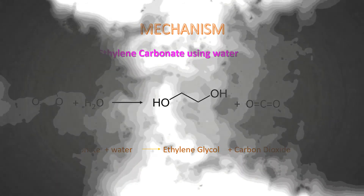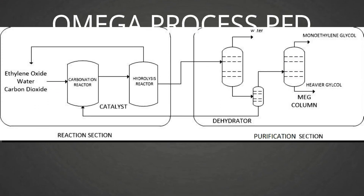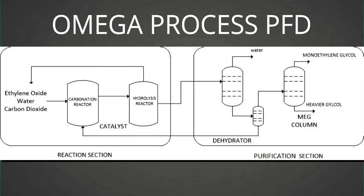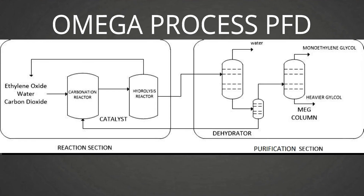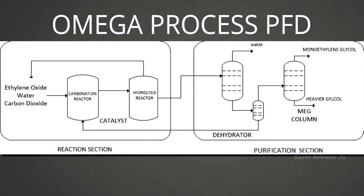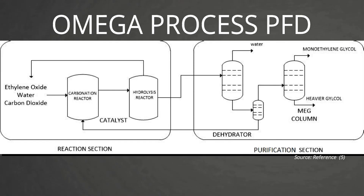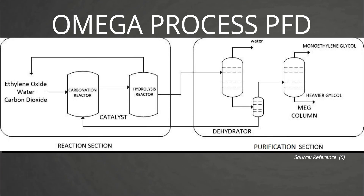This is the process flow diagram for the Omega process. There are two sections for the process: reaction and purification. The first section is to produce ethylene glycol, and the purpose for the second section is to produce higher quality ethylene glycol.